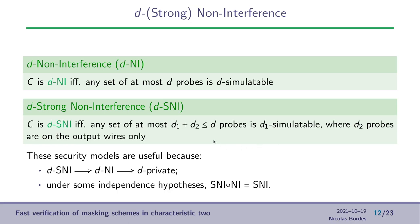What is useful with these security models is that they imply d-privacy, and also, most importantly, under some independent refresh hypothesis, the composition of a d-NI gadget with a d-SNI one is itself d-SNI. Thanks to this composition property, we can compose different small gadgets in order to create a bigger secure circuit.